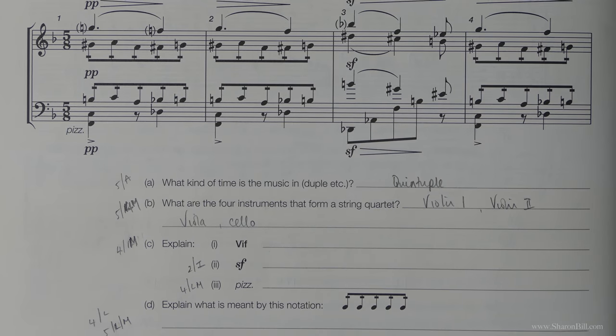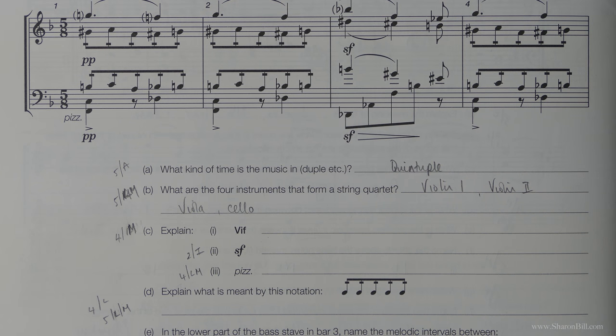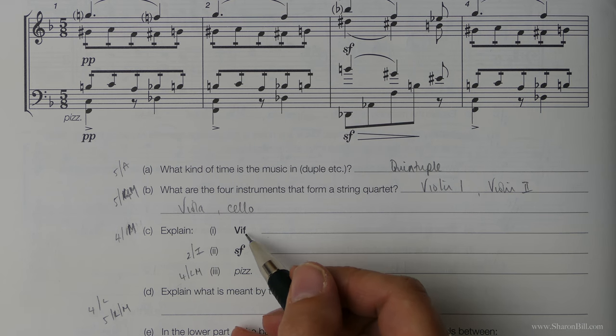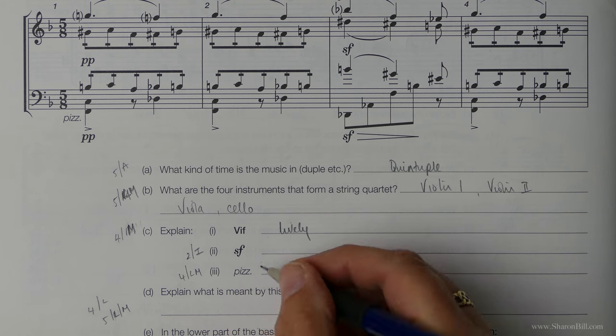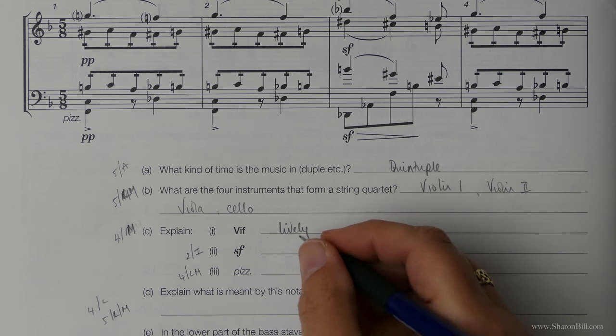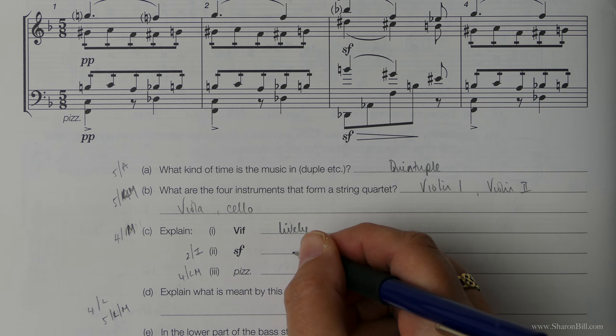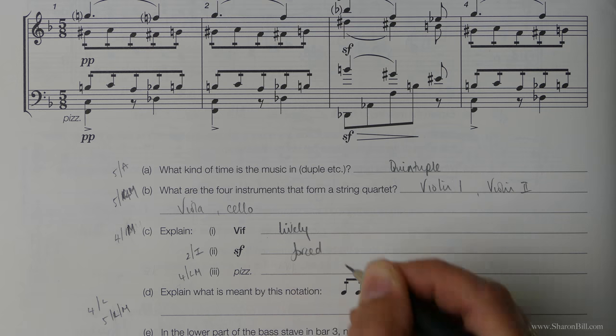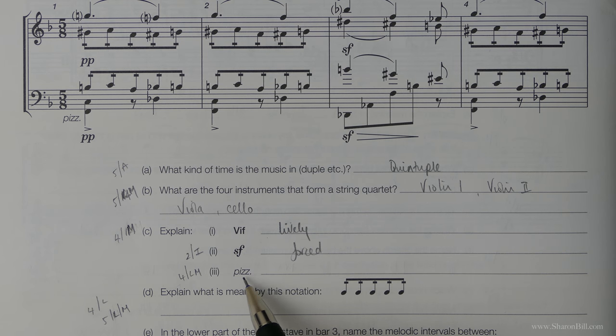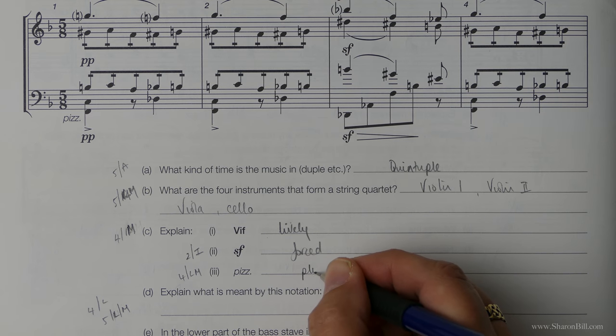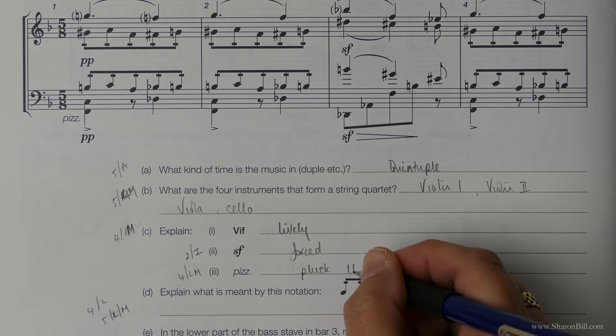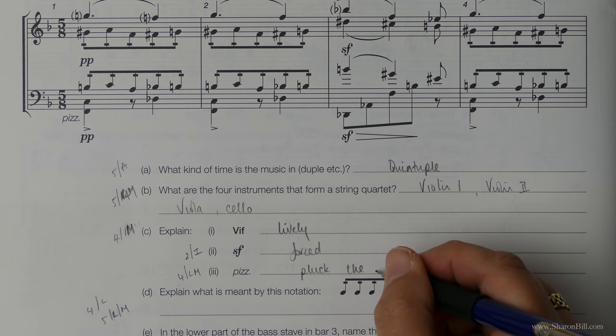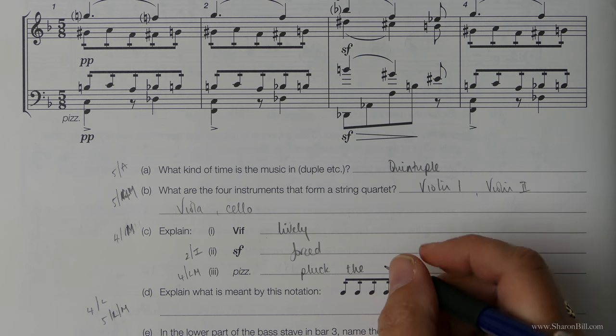So we have some musical directions to explain here. Vif means lively. If you remember SF, we talked about that previously not long ago and that was forced. And then this is short for pizzicato which means pluck the strings. So that's a specific string direction. Rather than using the bow they've been directed to pluck the strings.